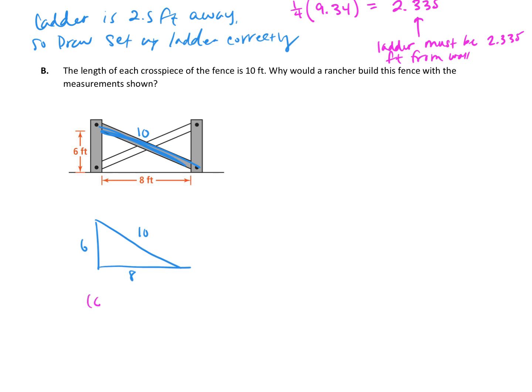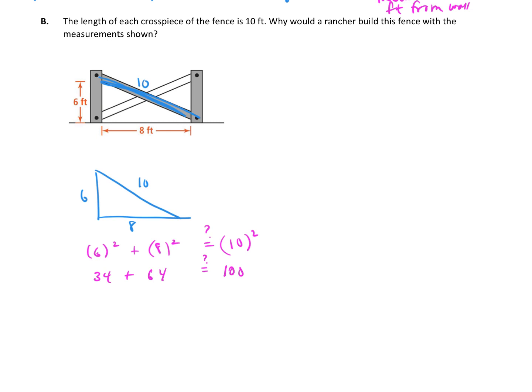So let's plug in 6 squared plus 8 squared. We want to know if that equals our hypotenuse squared. If this is true, we have a right triangle, and we'll talk about why it would be important to have a right triangle. But let's just continue with the math. 6 squared is 34, 8 squared is 64. Does that equal 100? 34 plus 64 is 100. That does equal 100. So that means that this is a right triangle.